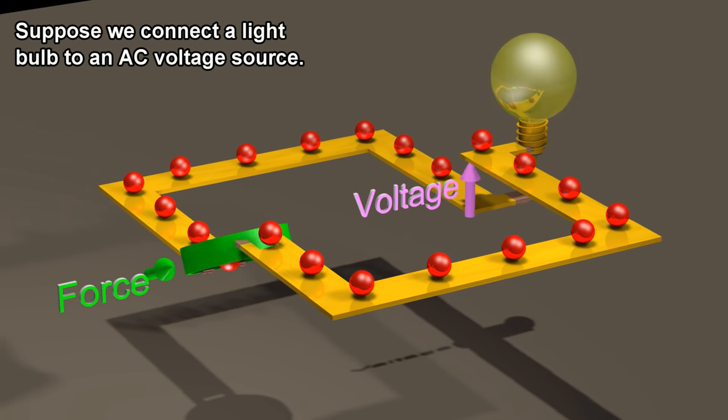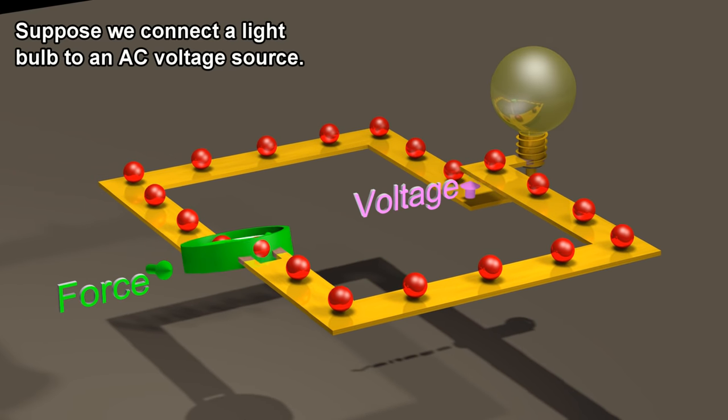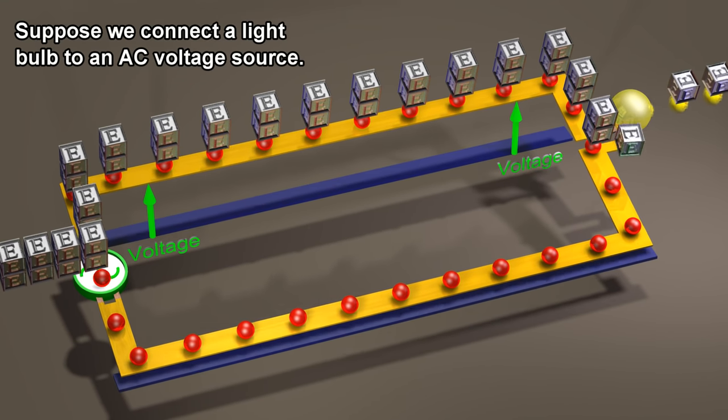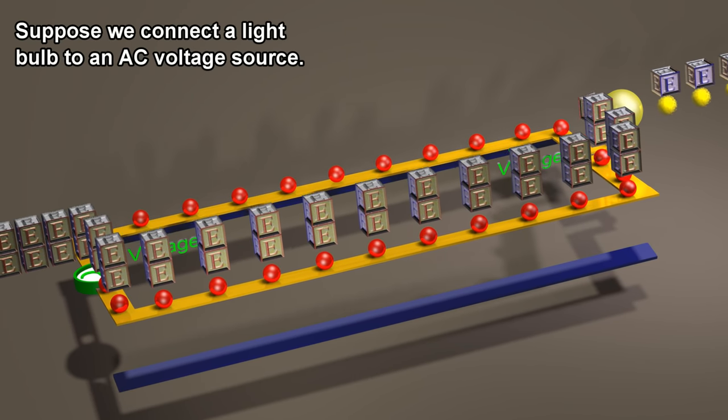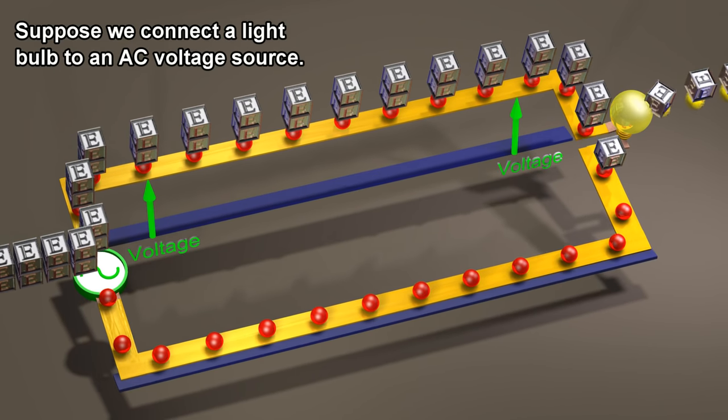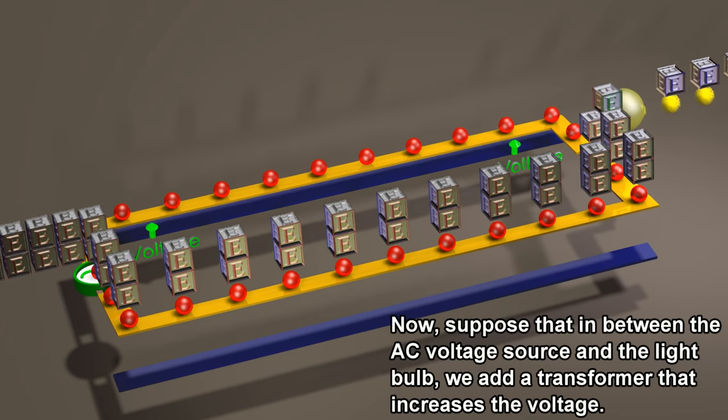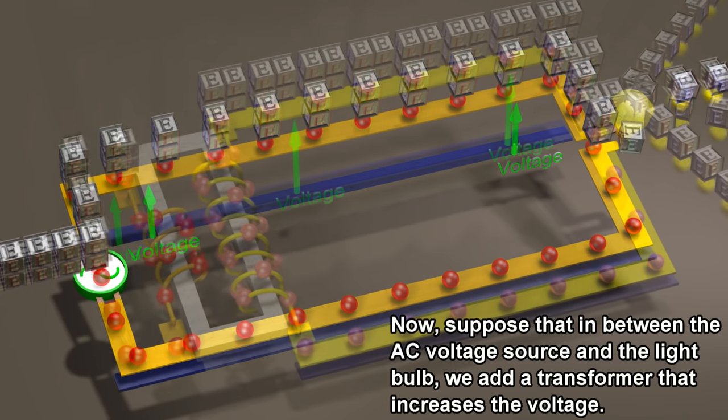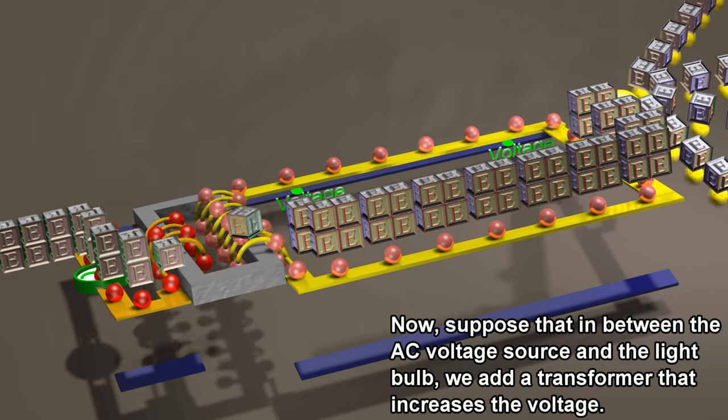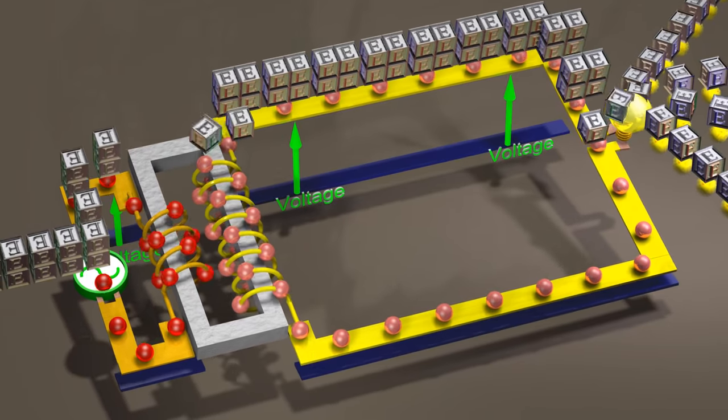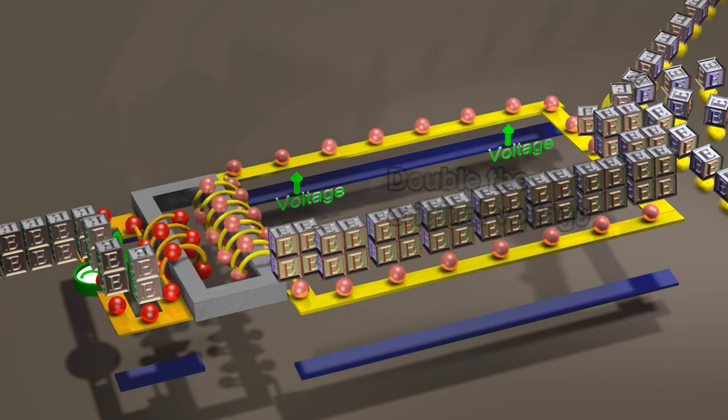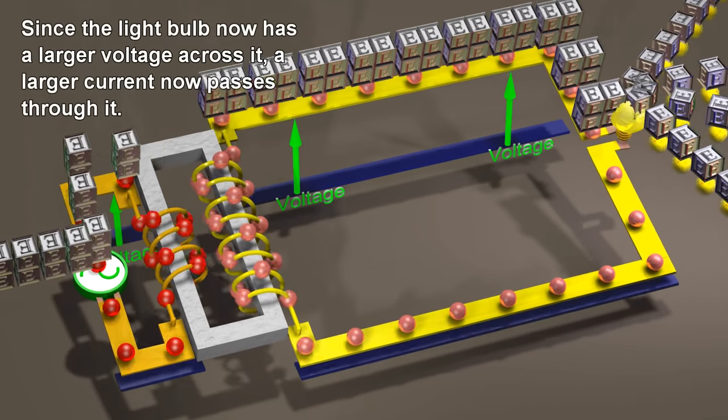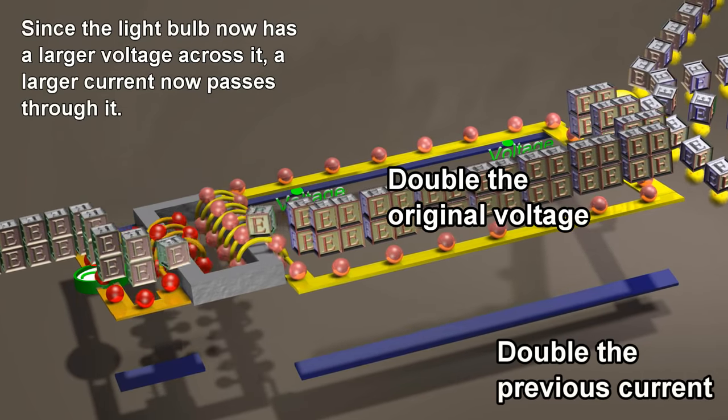Suppose we connect a light bulb to an AC voltage source. Now, suppose that in between the AC voltage source and the light bulb, we add a transformer that increases the voltage. Since the light bulb now has a larger voltage across it, a larger current now passes through it.